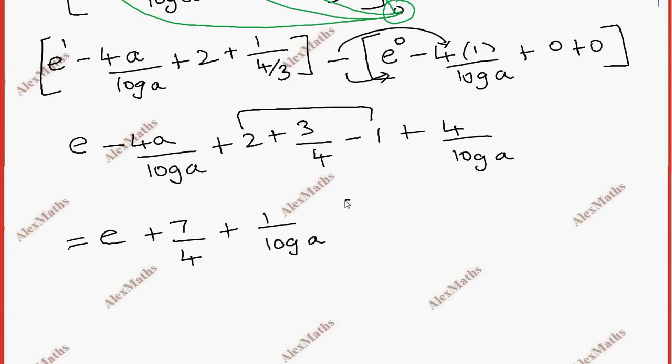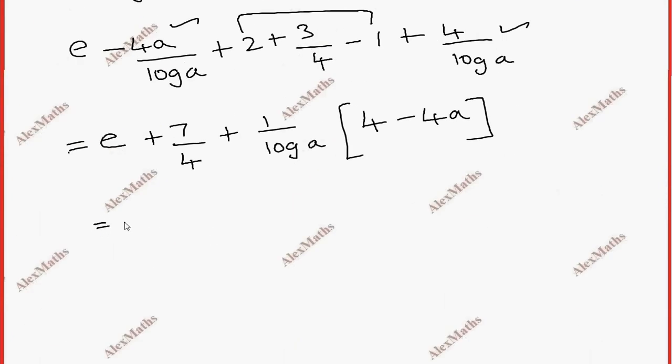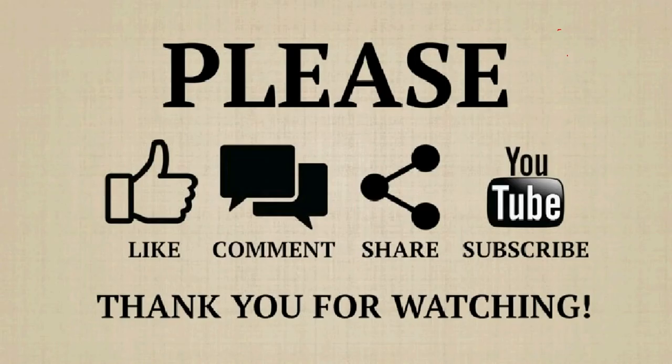So the numbers are common. Total answer is e plus 7 by 4 plus 4 by log a bracket open, 1 minus a. Thank you.